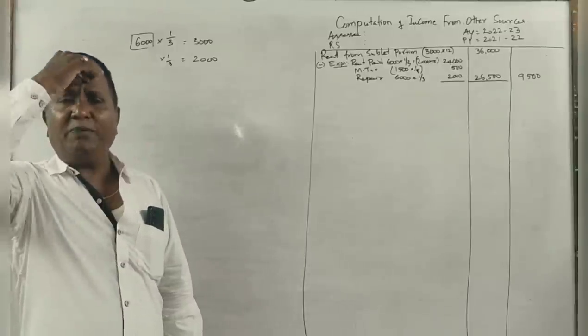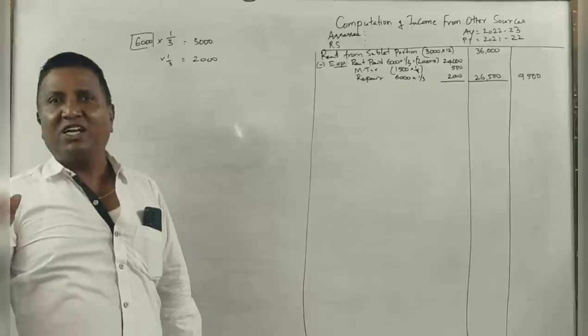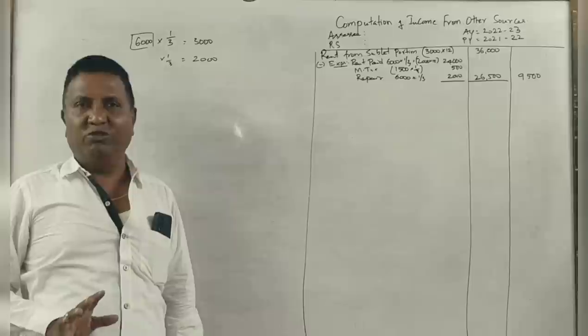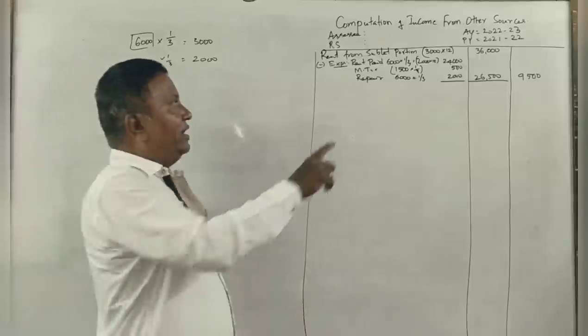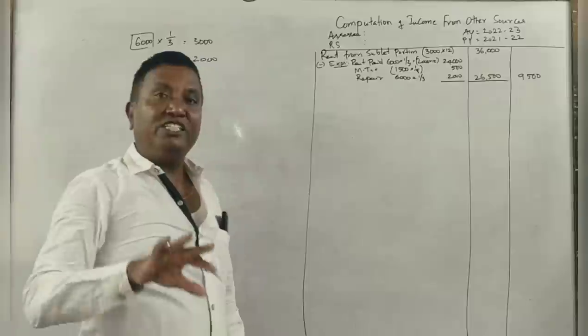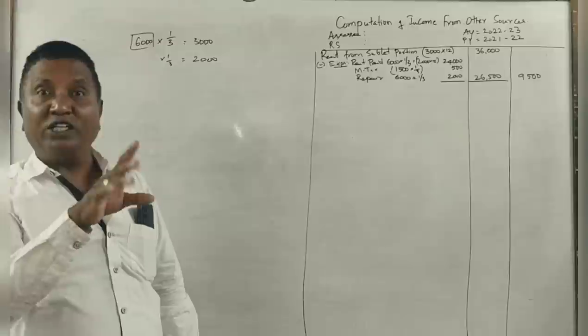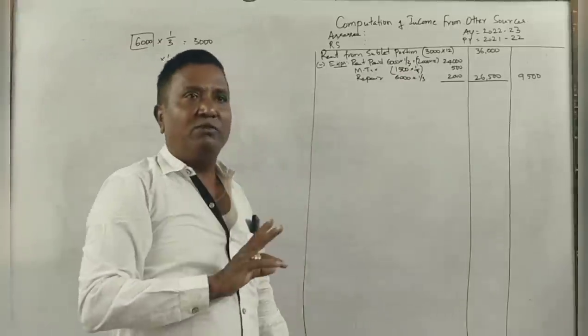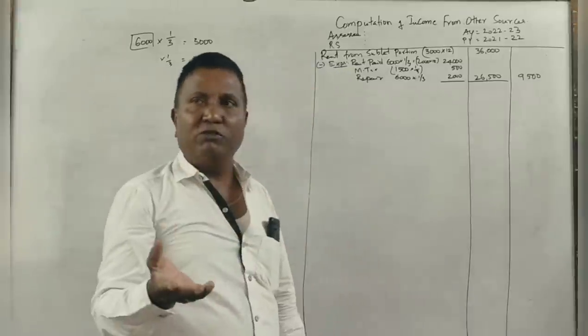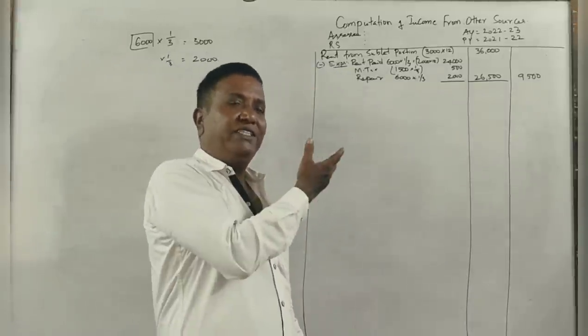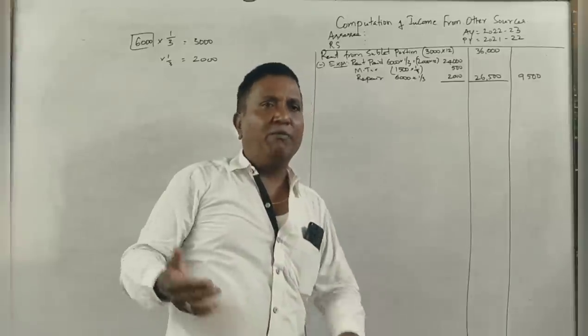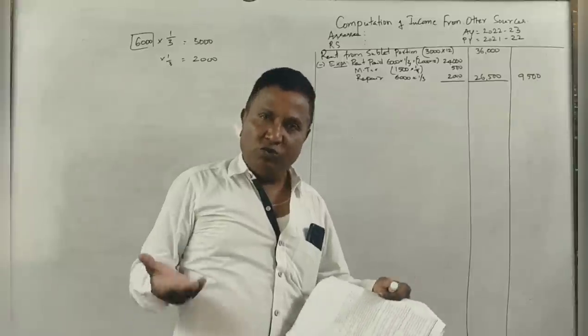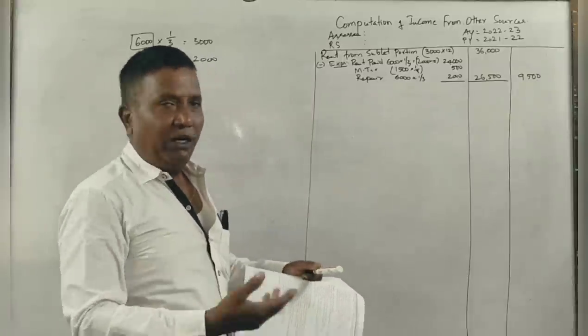Let's review different points. The rent received is 3,000 per month, giving 36,000 per year. Rent paid for one-third is 24,000. Municipal taxes for the whole house is 1,500, sublet portion is 500. Repair of 6,000 for the whole house, one-third portion is 2,000. Net income is 9,500.